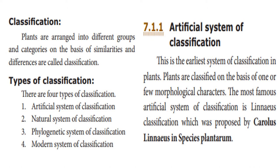Artificial system of classification. This is the earliest system of classification in plants. Plants are classified on the basis of one or few morphological characters. The most famous artificial system of classification is Linnaeus' classification, which was proposed by Carolus Linnaeus in Species Plantarum.